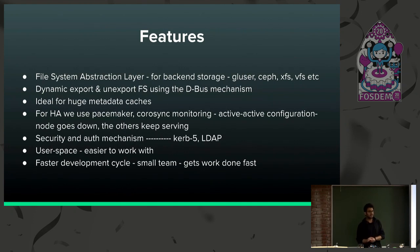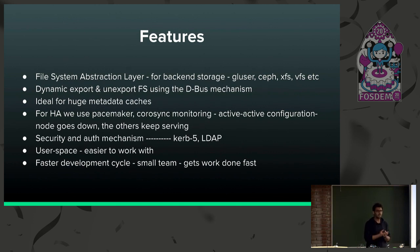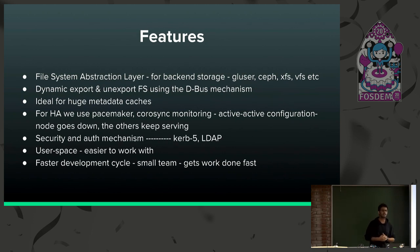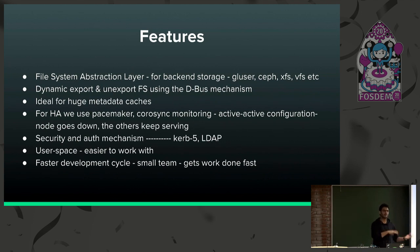FSAL — the File System Abstraction Layer — is like a plugin written in NFS Ganesha for your backend file systems. If you have a file system and you write a library in your file system to integrate it with NFS, you can write a FSAL in NFS Ganesha for it and then use your file system directly with NFS Ganesha. NFS Ganesha also supports dynamic exports using the DBus mechanism — you can give DBus commands to dynamically export and unexport file systems without having to shut down your entire server and restart.